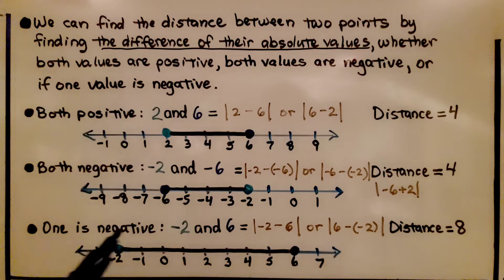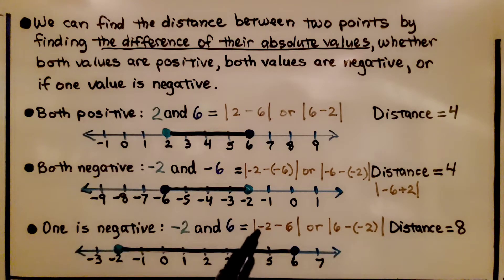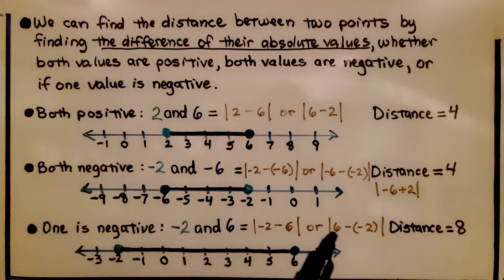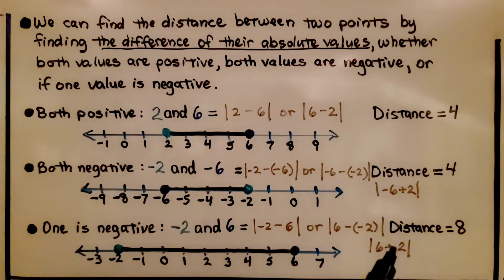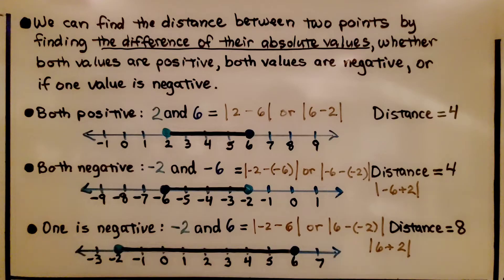When one is negative, we have negative two and positive six. We can do the absolute value of negative two minus six, or we could do the absolute value of six minus negative two, or we can add the opposite: the absolute value of six plus positive two. The distance is eight — between negative two and six, we have eight units.